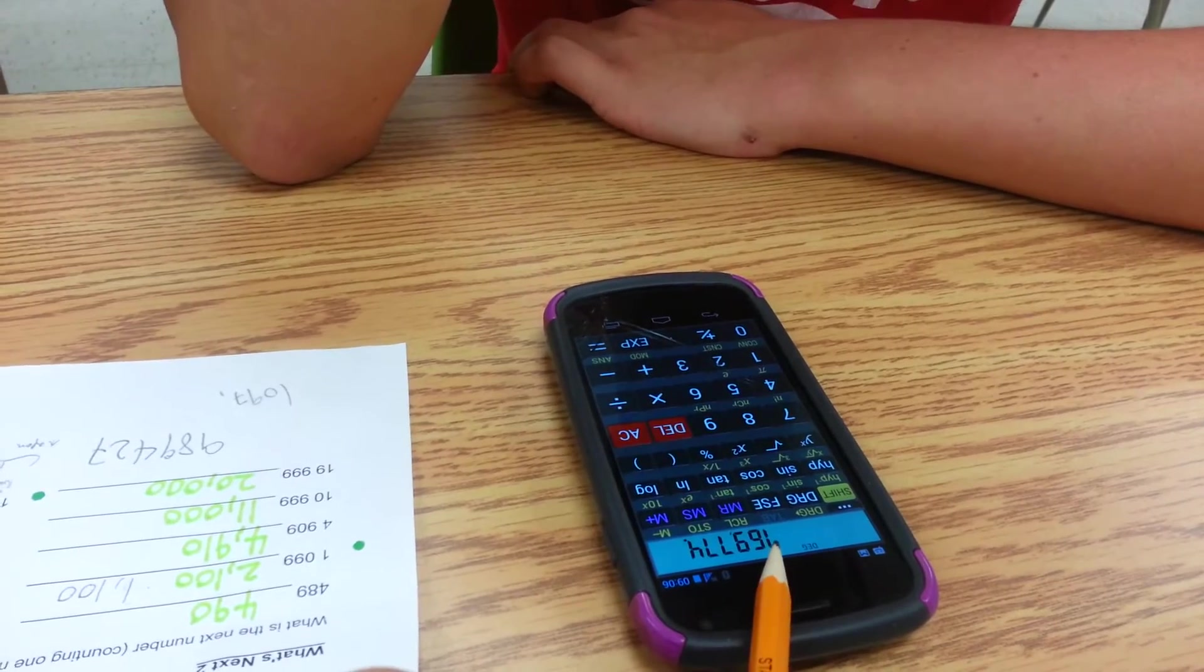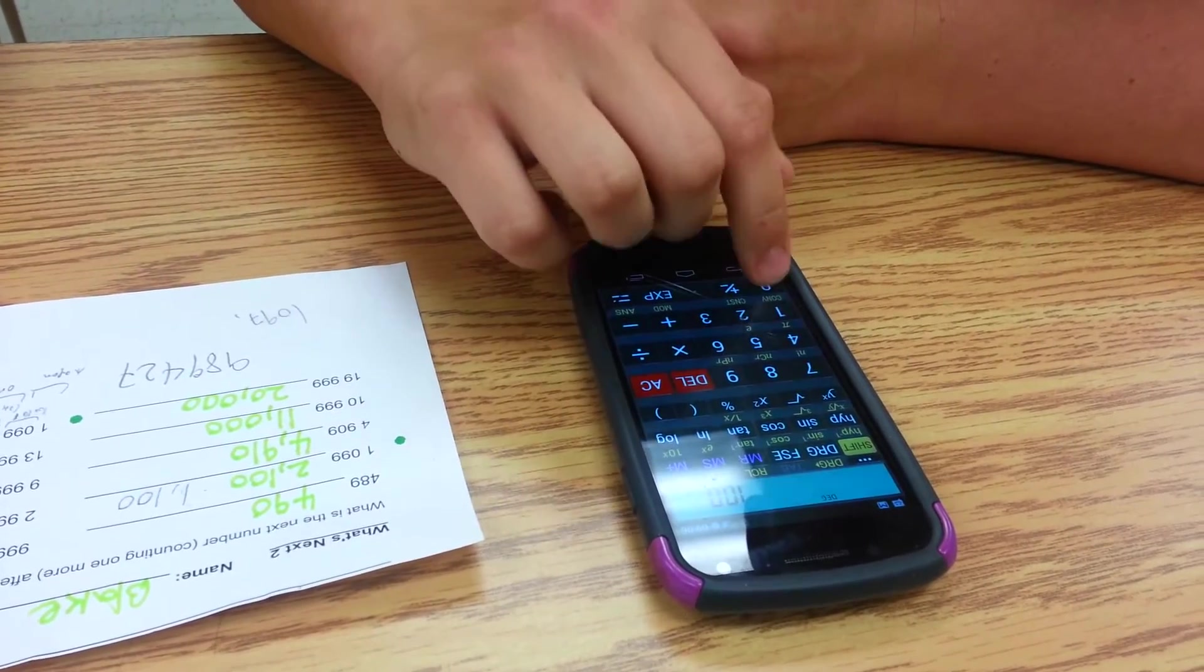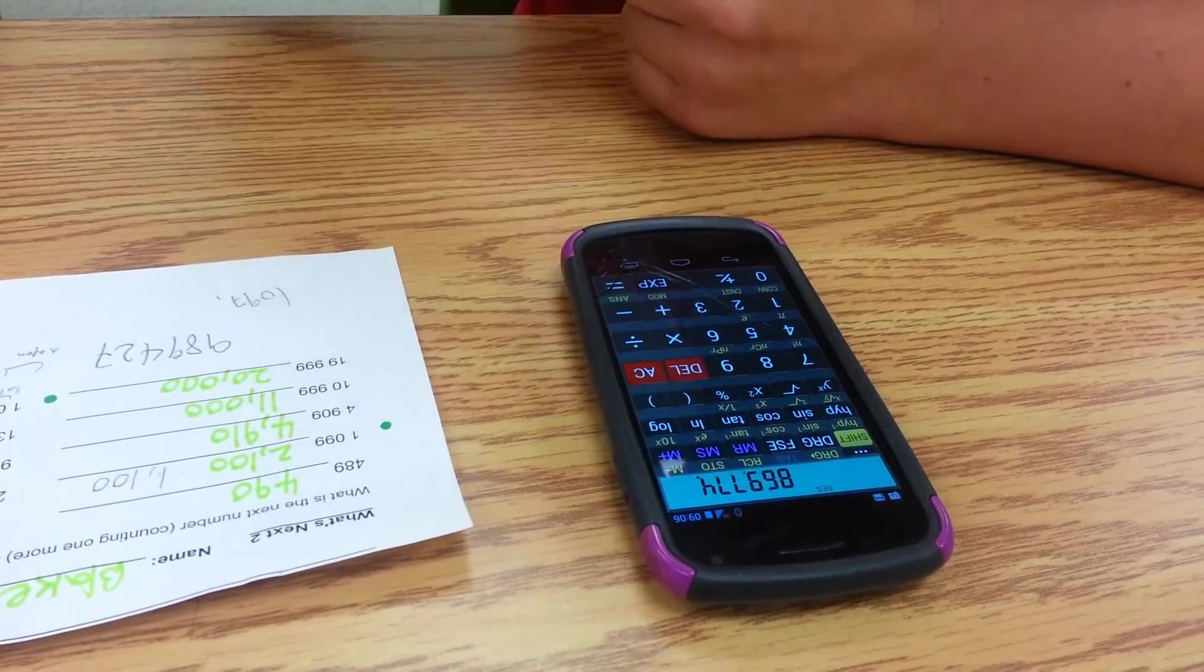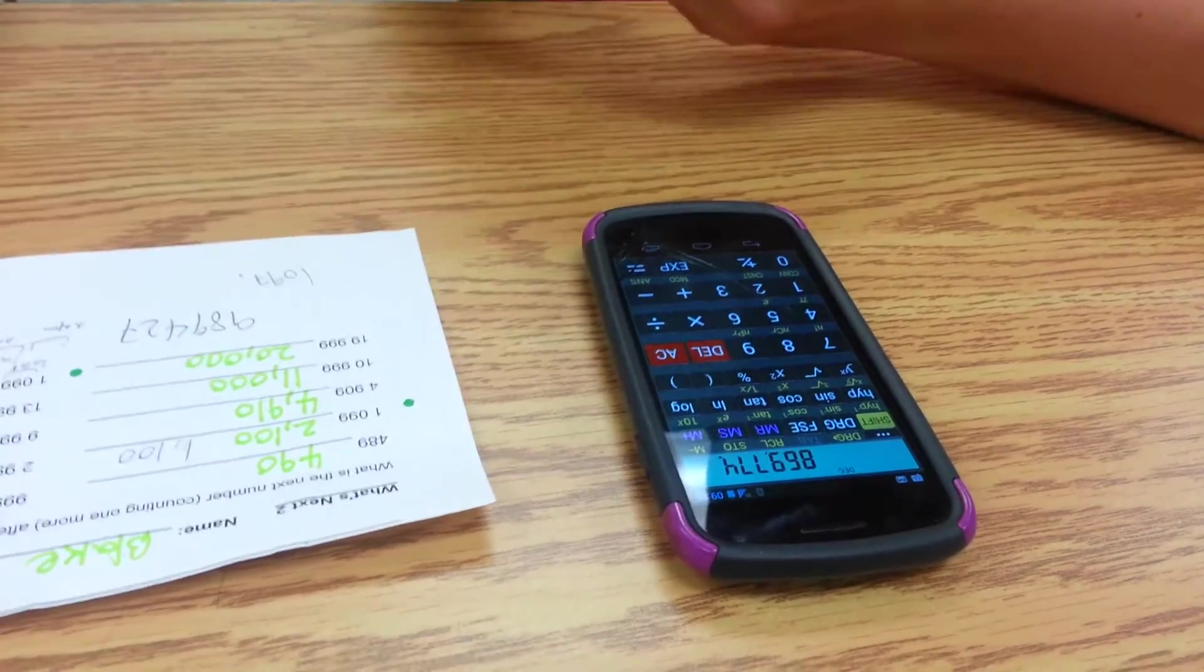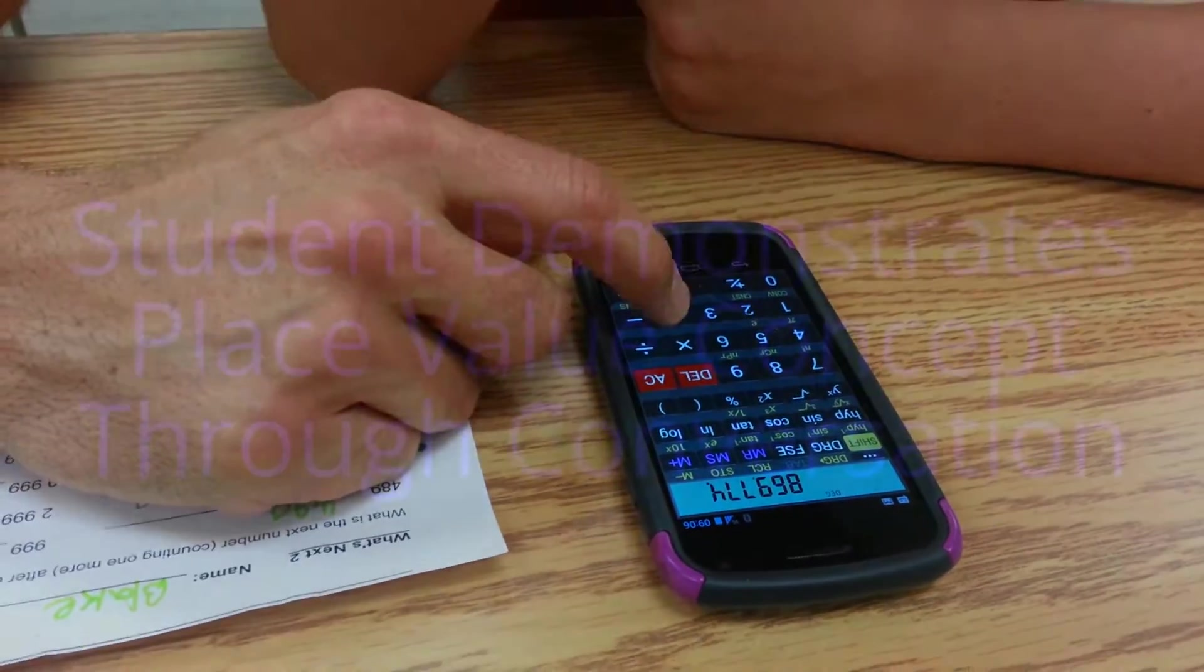So, if I had 100,000 more, what's that going to change to? An 8. All right. You try it. Add 100,000 more. Plus. What's that number? 869,774. Okay. Let's do another 100,000.